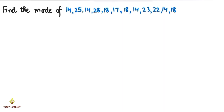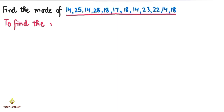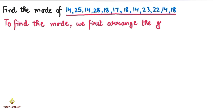Now the next question is: find the mode of the given data. To find the mode, we first arrange the given data in ascending order — ascending order means from the least number moving to the highest number.